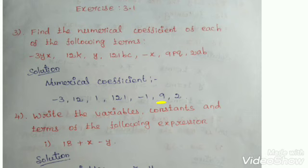Next, 9PQ — coefficient is 9. 2AB — what is the coefficient here? 2. Are you understanding? Find the numerical coefficient means the numbers present in the term. That is the numerical coefficient.